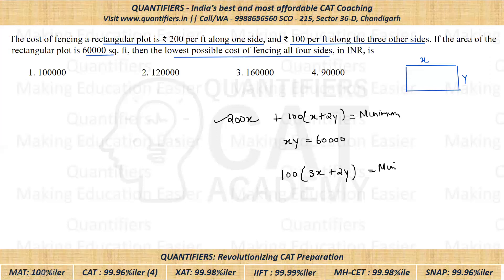Now students, 100 is a constant, so it's not going to make any difference. Ultimately, I can say that I have to find the minimum value of 3X plus 2Y.